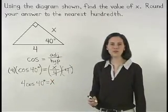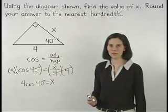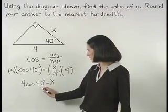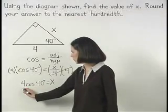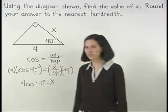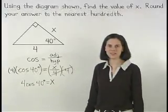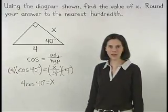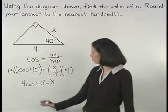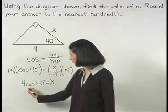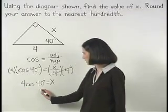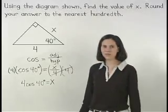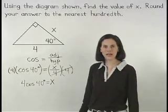Now if you're using a scientific calculator, you'll type 40 cosine times 4 equals to find the value of x. And if you're using a graphing calculator, you'll type 4 times cosine 40 enter to find the value of x.